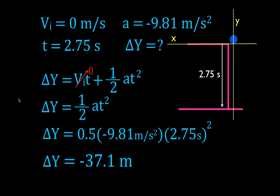The cliff is 37.1 meters tall — 37.1 meters high. We're asked for the change in position, and since it's falling in the negative direction, you need the negative sign in front of your answer. To recap: we drew a diagram, wrote down our variables, filled in what we know and don't know, chose the right equation, simplified it, plugged the values in, and got the answer with the correct sign.